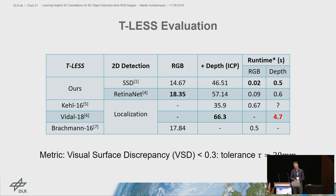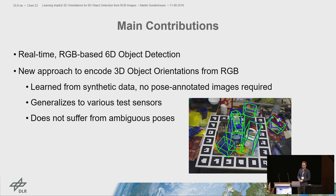To conclude, our main contributions are a real-time RGB-based 6D object detection pipeline and a new approach to encode 3D object orientations from RGB. It is fully learned from synthetic data, so we don't need any pose-annotated images. It generalizes to various test sensors and does not suffer from ambiguous poses.